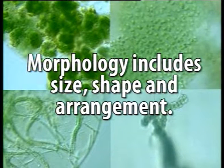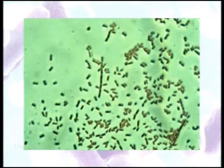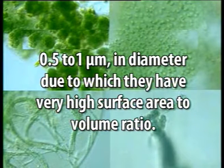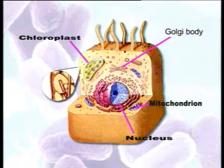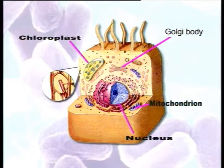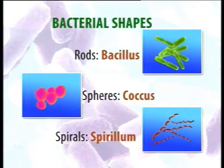Morphology includes size, shape, and arrangement. As far as size is concerned, since they are microscopic in nature they are very small — from 0.5 to 1 micrometer in diameter generally — due to which they have a very high surface area to volume ratio. This high surface area to volume ratio compensates for many functions which are otherwise performed by organelles such as mitochondria, chloroplasts, or other membrane-bound organelles in eukaryotes.